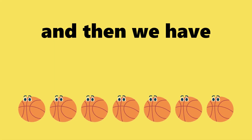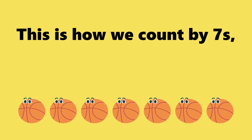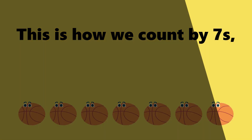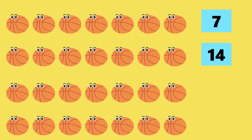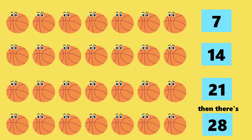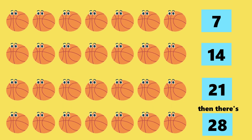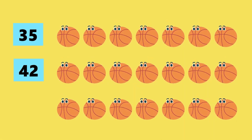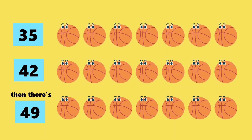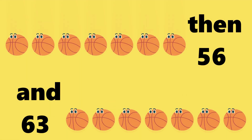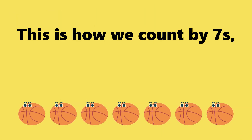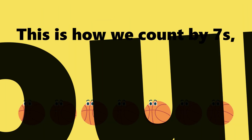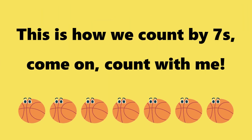And then we have 70. This is how we count by 7s. Come on, count with me: 7, 14, 21, then there's 28, then 35 and 42, then there's 49, then 56 and 63, and then we have 70. This is how we count by 7s. Come on, count with me.